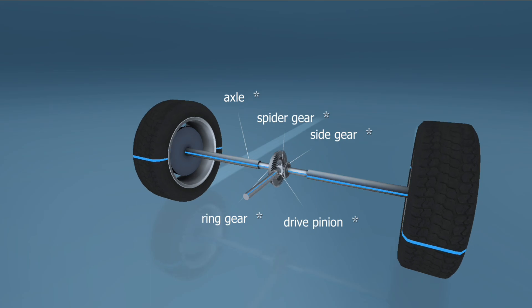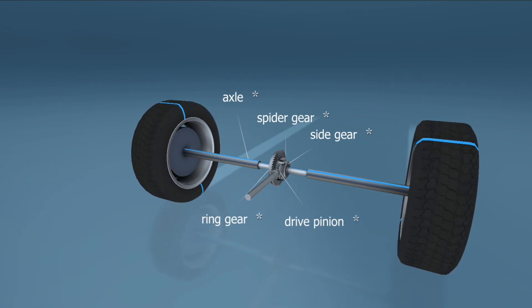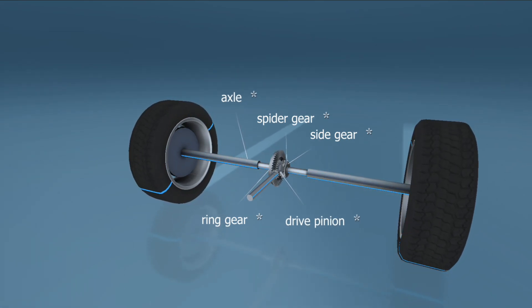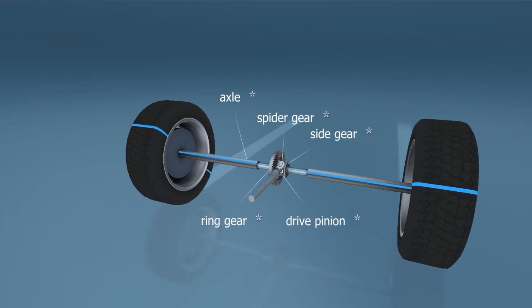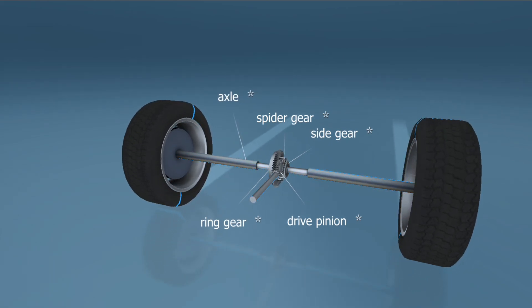We add another pair of gears to split the power driving the axles. These extra gears are called spider gears or planetary bevel gears.